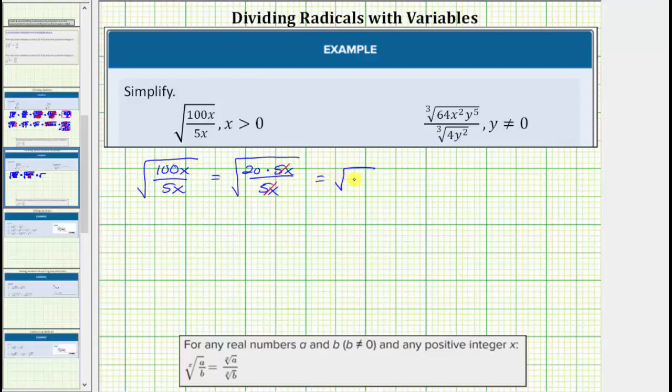But now we need to simplify the square root of 20 by identifying any perfect square factors of 20. To do this, let's look at the prime factorization of 20, which is 2 times 2 times 5. So the square root of 20 is equal to the square root of 2 times 2 times 5.